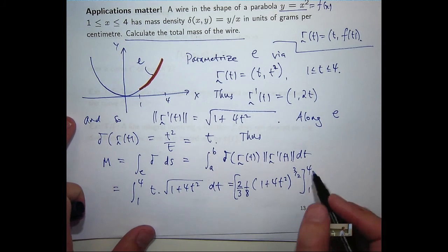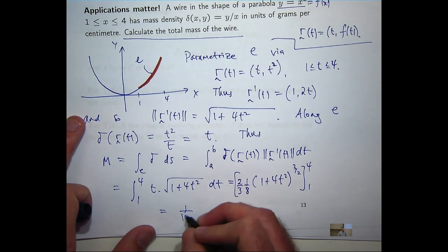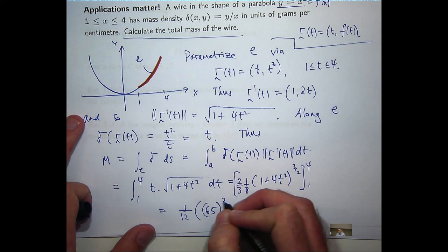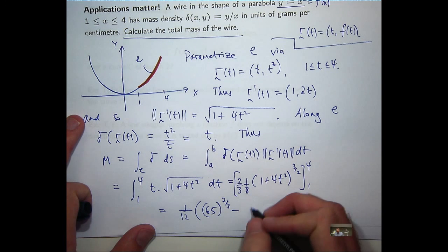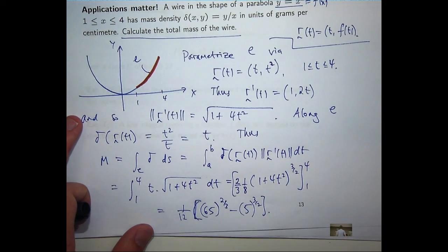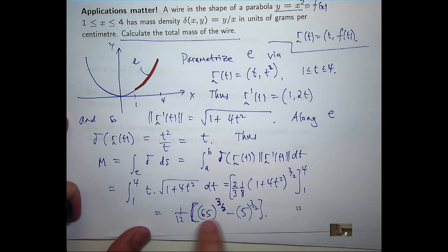OK. So when I put in t equals 4 and t equals 1 and cancel out here, I should get the following. Oops. OK. So this should be 65 to the power of 3 on 2. OK.